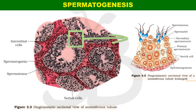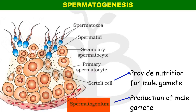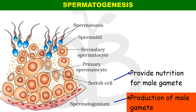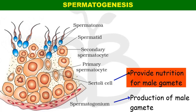We will now look at spermatogenesis inside the seminiferous tubules. This is the male germ cell, or spermatogonium. The seminiferous tubules contain spermatogonia and Sertoli cells. Spermatogonia are the male germ cells responsible for sperm production. Sertoli cells provide support, and the spermatogonium is maintained within the tubules.